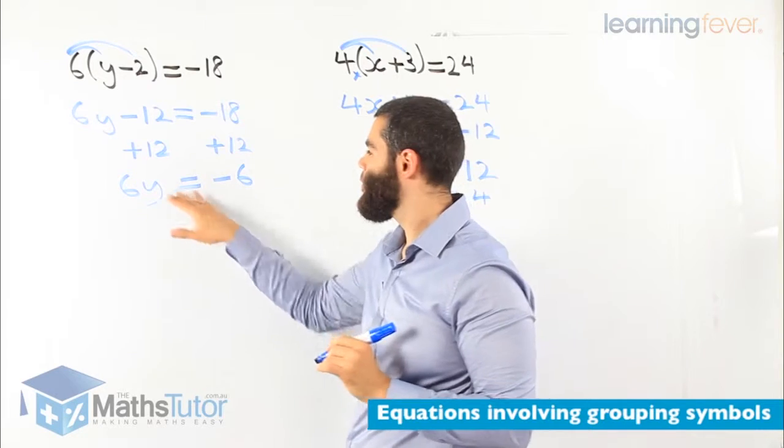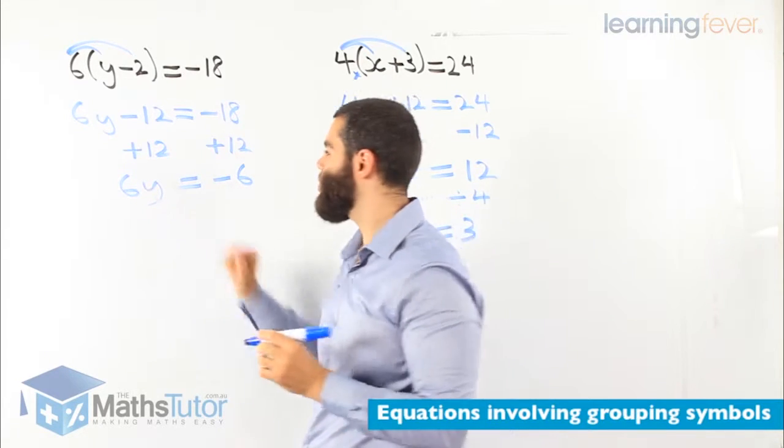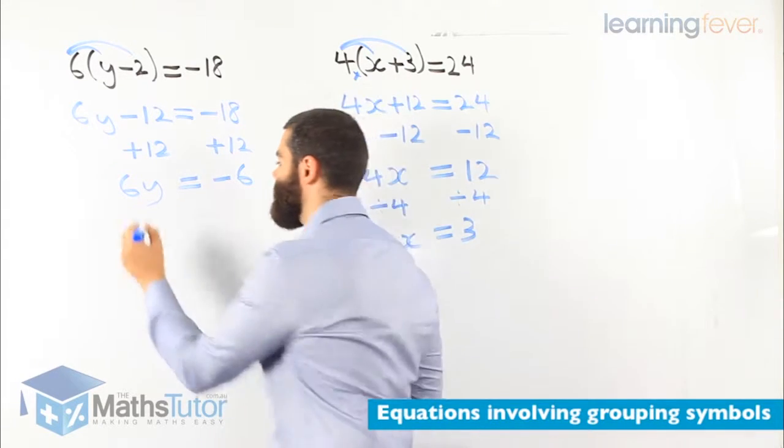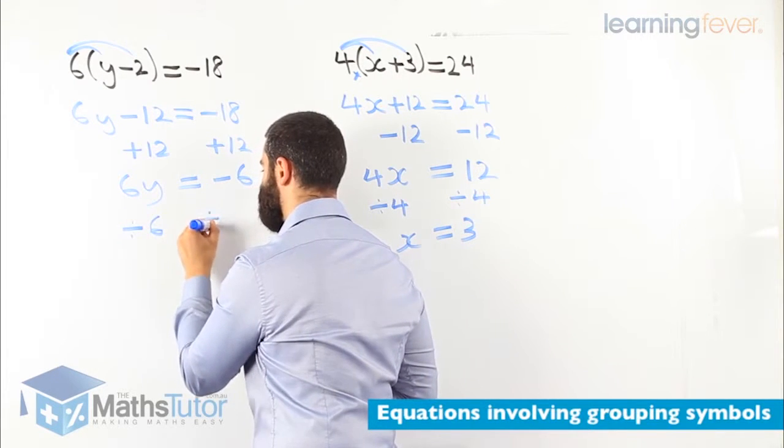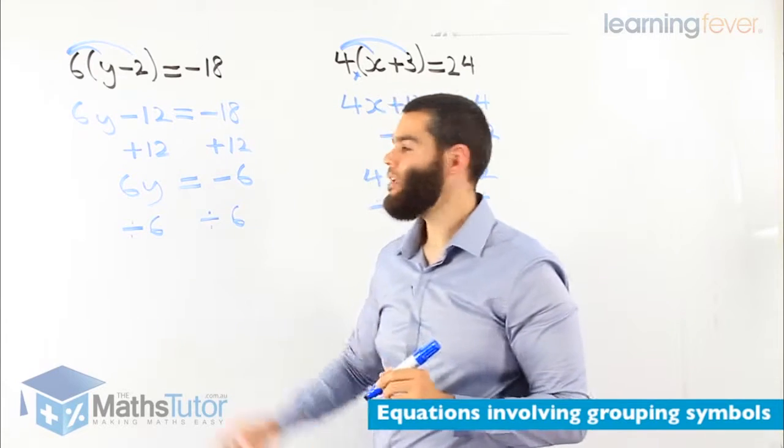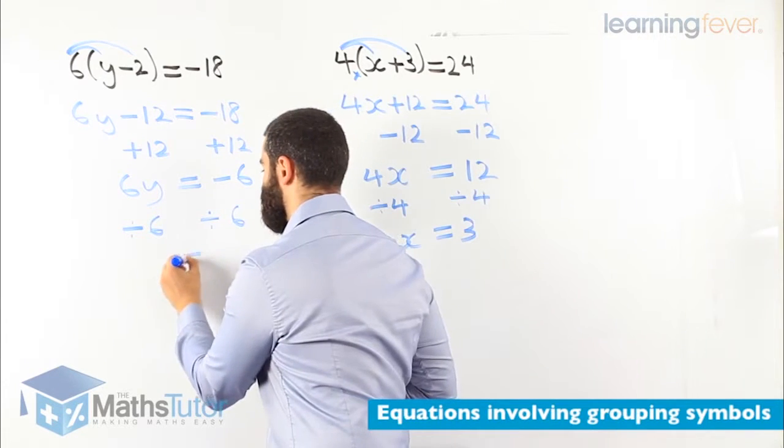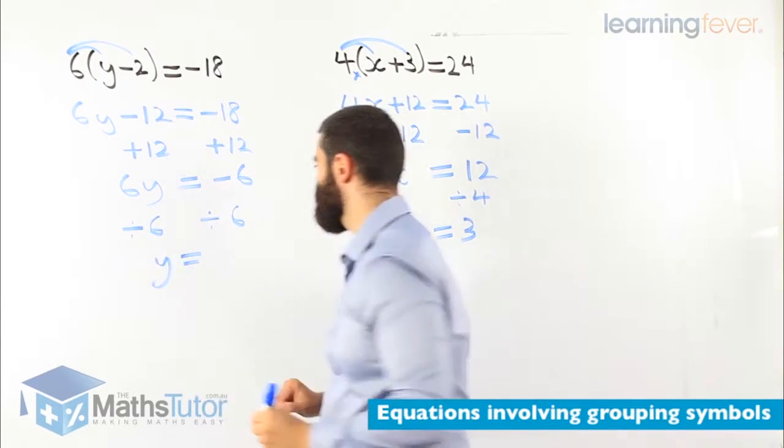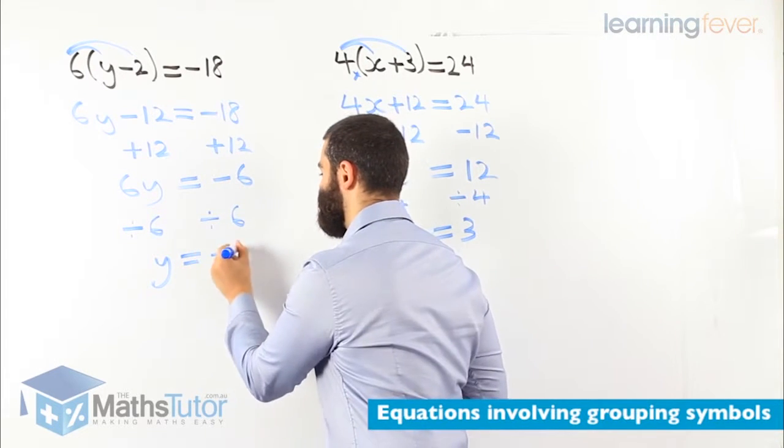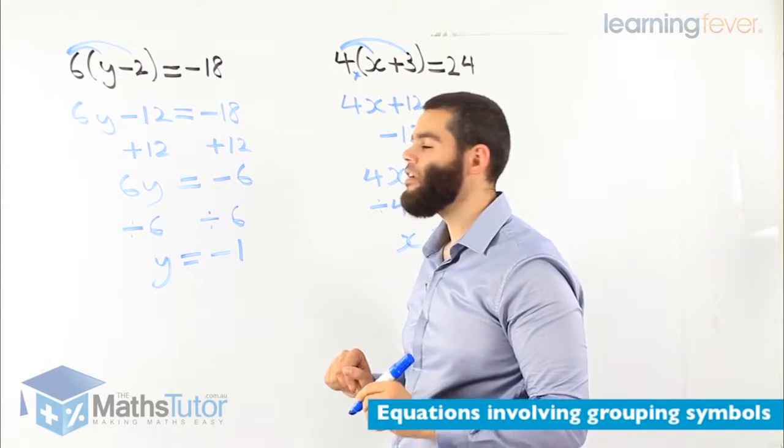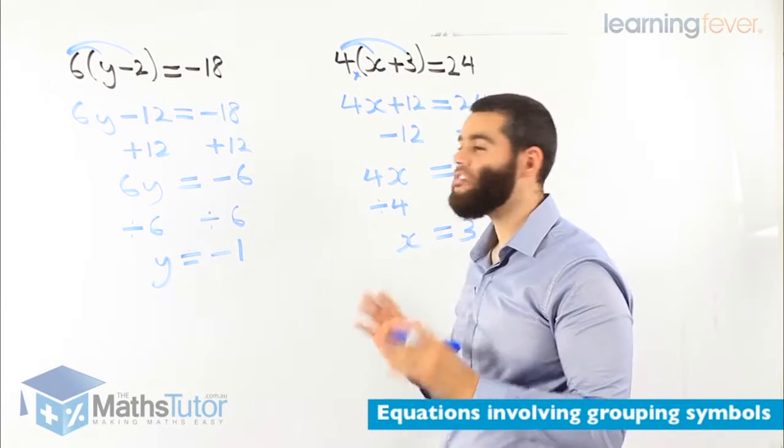Negative 18 plus 12 is negative 6. So 6y equals to negative 6. We haven't finished yet. We would like to know only y. So 6y is 6 times y. So we divide by 6. And divide by 6 here as well. 6 divided by 6, we're left with 1y. And negative 6 divided by 6 is negative 1.